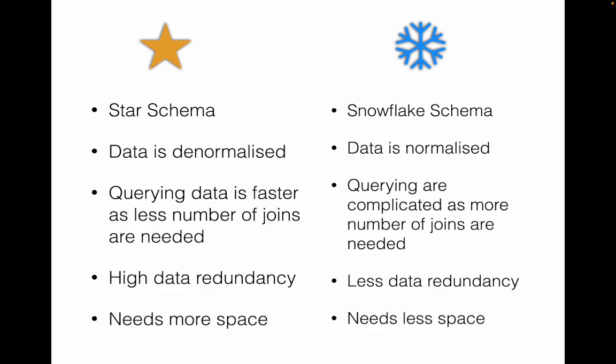Star schema is much more suitable for data visualization applications where you don't want complicated queries but need data quickly — for example, so your dashboards don't run slow. You denormalize the data and store additional information in the same table to answer questions faster. BI applications could go with star schema, while data warehousing applications that need historical data with pinpoint accuracy and slowly changing dimensions should go with snowflake schema. I hope this video was informative — please let me know your thoughts in the comments. This is Kishan signing off, thank you.